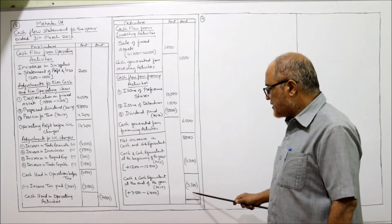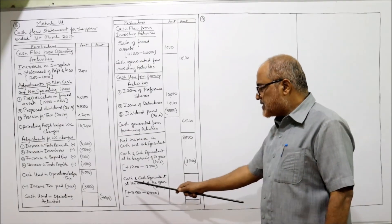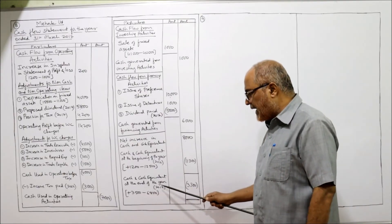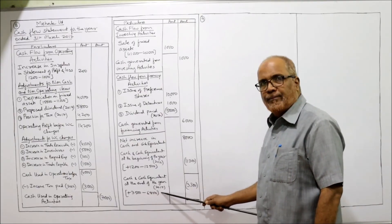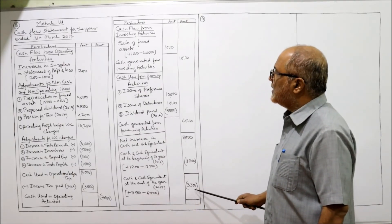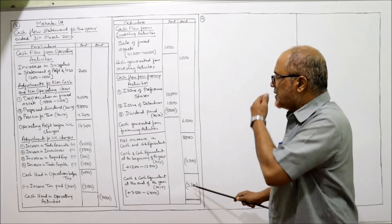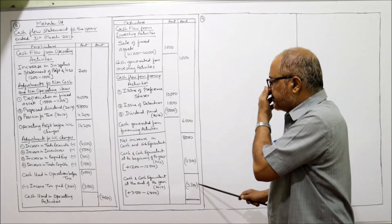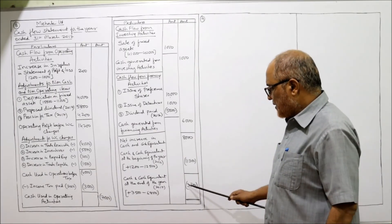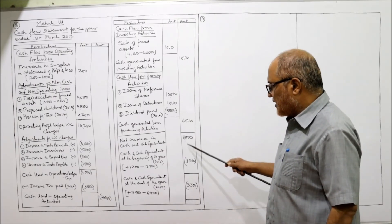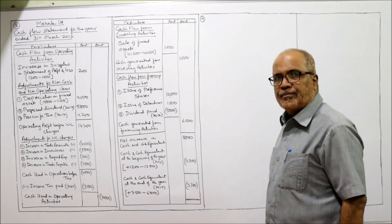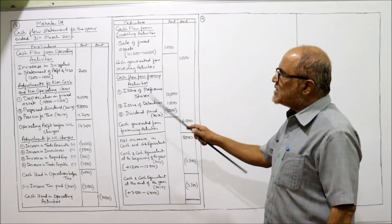You will get minus 3,300 plus 8,000 equals negative 3,300 adjusted to give 3,300 — this is the cash and cash equivalents at the end of the year. If you add up you will get 3,300.